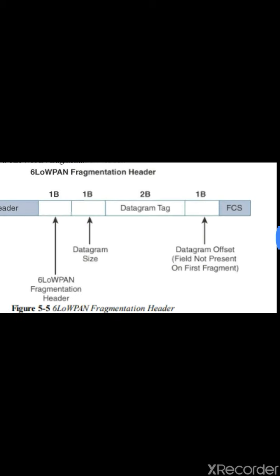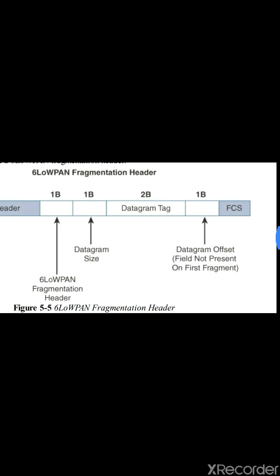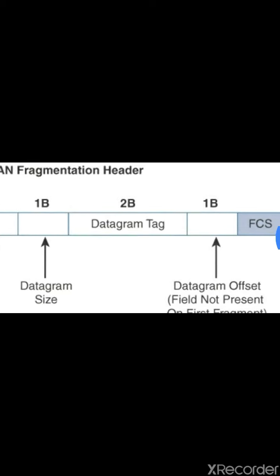In the first fragment, the datagram offset field is not present and can be set to 0. Since the datagram offset describes how far into a payload a particular fragment occurs, and initially only one fragment is sent, there is no need to track fragment position. Because of this, the fragmentation header for the first IPv6 payload fragment will be 4 bytes: 1 (starting fragment) + 2 (datagram tag) + 1 (datagram size).